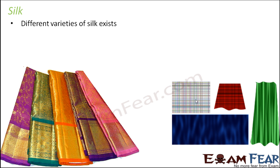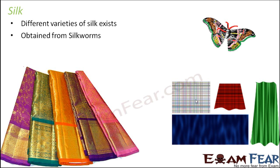In this section we will see where we obtain silk, the different varieties of silk, and how we process it — following the same method we used for wool. Silk is obtained from silkworms. Now, have you seen butterflies? Silk moths look very similar to butterflies. They are called silk moths because silk is obtained from them.